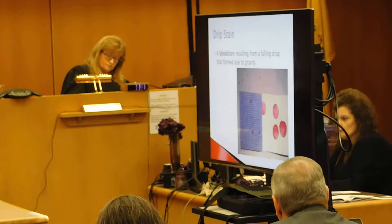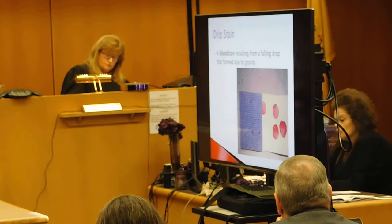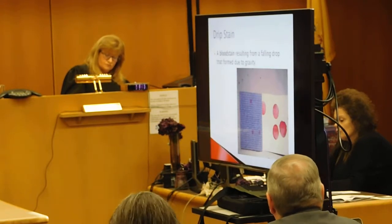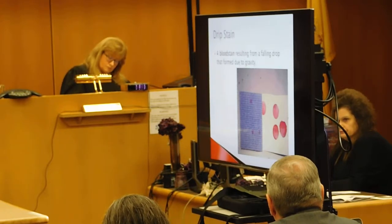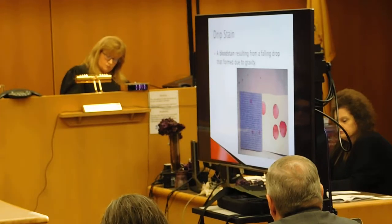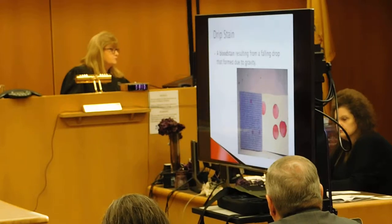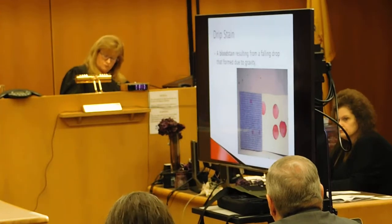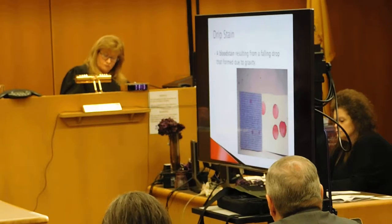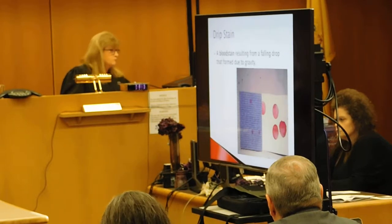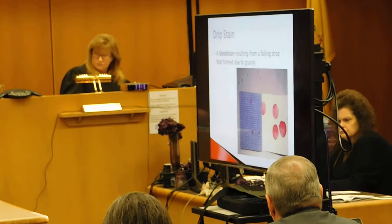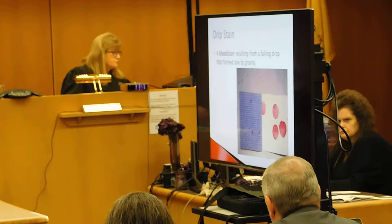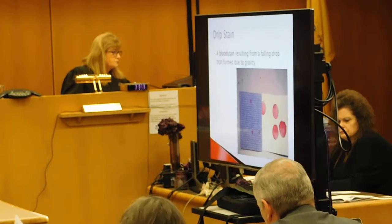Moving from slide seven to slide eight. This is simply a drip stain — a very large stain with low energy, a very passive drop. When you look at stains like this, you consider there's not a lot of force applied. But you also have to consider the surface on which the blood is applied. These two droplets are the same volume, dropped at the same height — one is on smooth cardboard, the other is on carpet. Droplets on carpet will wick into the material and appear much smaller than they actually are.